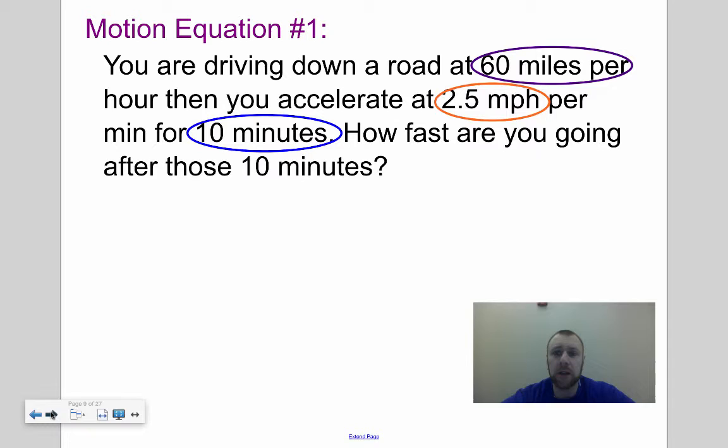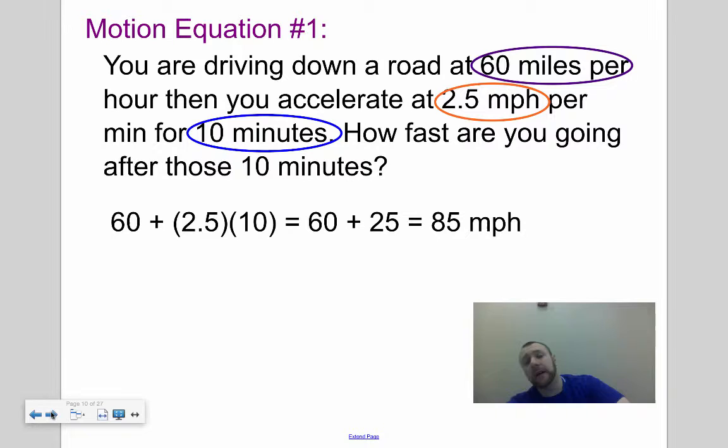You take your starting speed, 60, and then you're accelerating, so you're adding more speed, 2.5 miles per hour for 10 minutes. So 2.5 times 10, and so you get 60 plus 25, so you're going 85 miles per hour after 10 minutes.